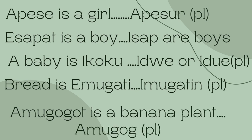Apesse is a girl, and many girls are apesur. Esapart is a boy. Isap are boys. A baby is ikokuo.